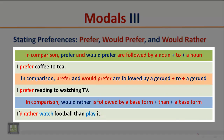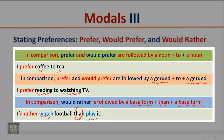In comparison, 'prefer' and 'would prefer' are followed by a noun plus 'to' plus a noun — for example, 'I prefer coffee to tea.' They can also be followed by a gerund plus 'to' plus a gerund — for example, 'I prefer reading to watching TV.' 'Would rather' is followed by a base form plus 'than' plus a base form — for example, 'I'd rather watch football than play it.'